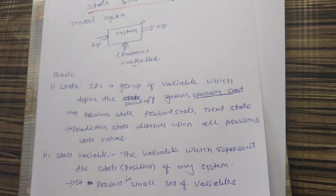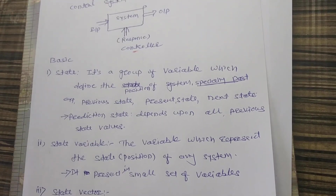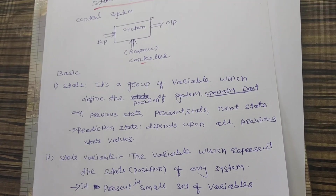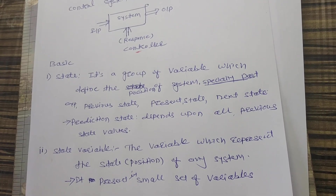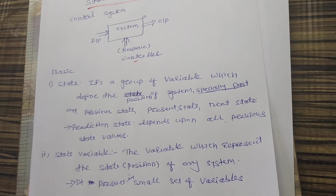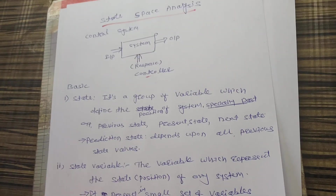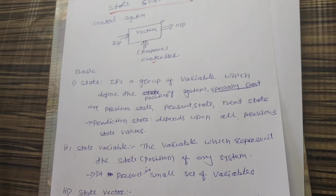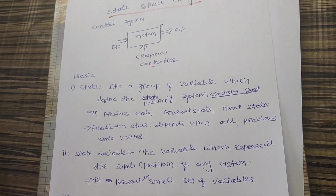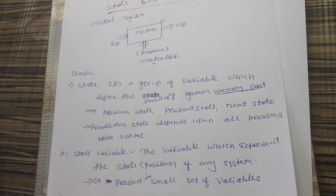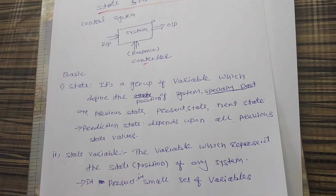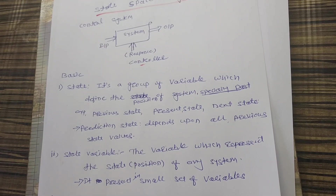Next is 'state variable.' The variable which is used to represent the state of the system is called the state variable. In a control system we have different states: input state, output state, and response state. Different variables are used to define each state. Generally, x is used to define the input, y is used to define the output, and h is used to define the response. These individual variables are called state variables, and they are present as a small set of variables.